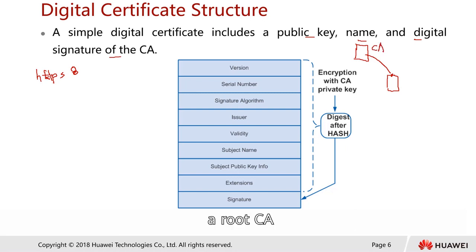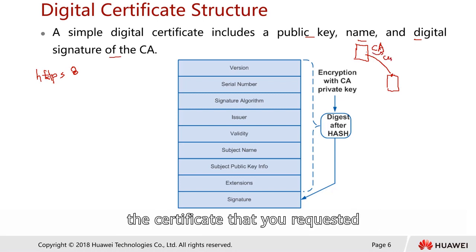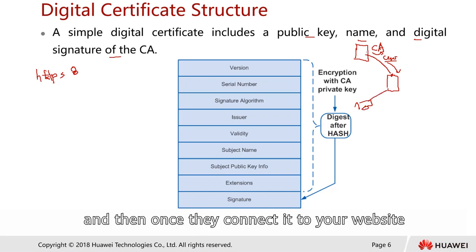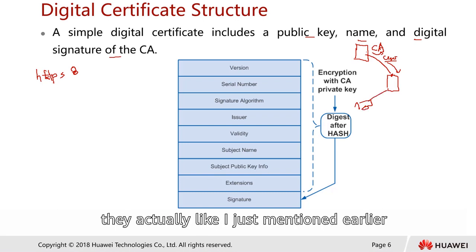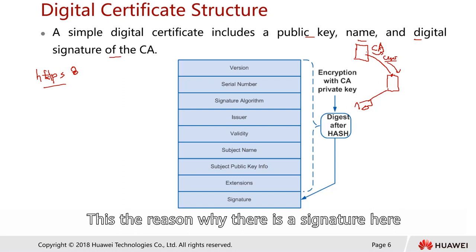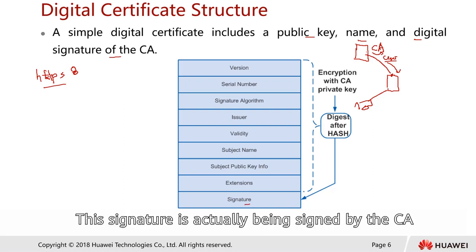When somebody browses to your website — connected via HTTPS — they want to know: can I trust this website? This is the reason why there is a signature here. This signature is actually signed by the CA.